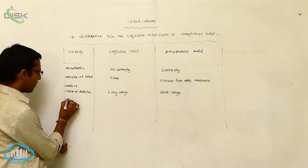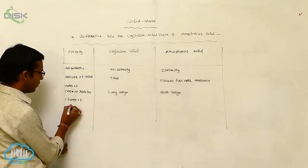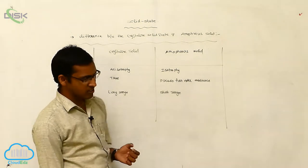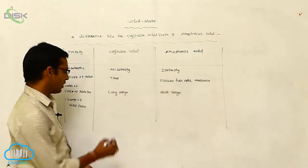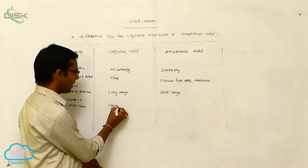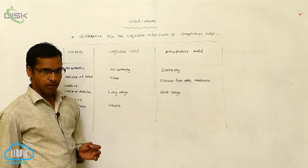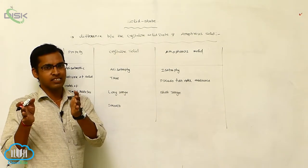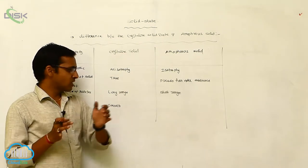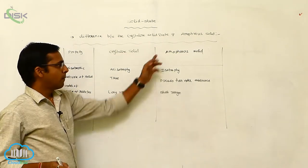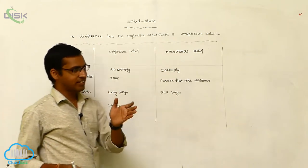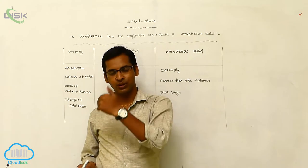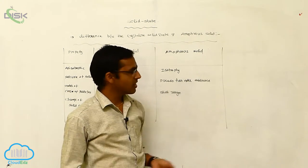Next is cleavage or breakage. Whenever crystalline solids undergo cleavage, they give a smooth or plain surface — the solid is divided into two pieces that appear in a regular manner. But when amorphous solids undergo cleavage, the edge appears in an irregular manner.